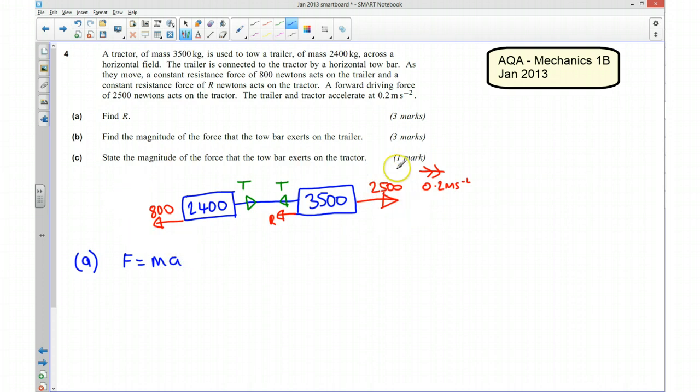We're going to have a look at the net forces across this whole body. We've got 2,500 newtons acting in the positive direction. We've got our resistance to motion acting against motion in the negative direction, and also this 800 here that's against motion. Our two tensions will cancel each other out. So my net force is going to be 2,500 take away 800 and take away my unknown resistance. That's going to be equal to mass times acceleration. My mass is the total mass, which is 5,900 times by acceleration, which is 0.2.